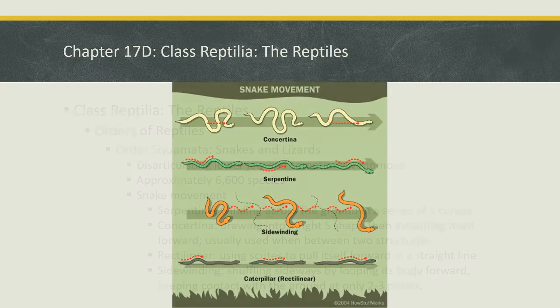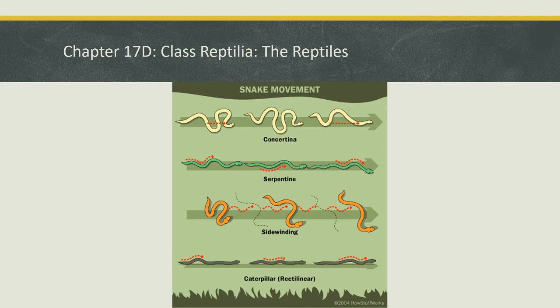Some pictures of what these look like: concertina — tightening up and then extending. Serpentine — the regular snake movement you'd probably think of. Sidewinding — you can kind of see what's going on. The next video will help explain that. And then caterpillar or rectilinear, using its scoots to inch forward in a straight line.